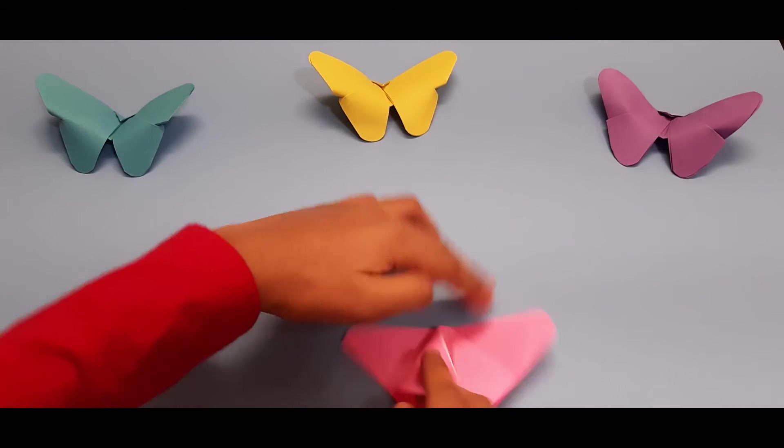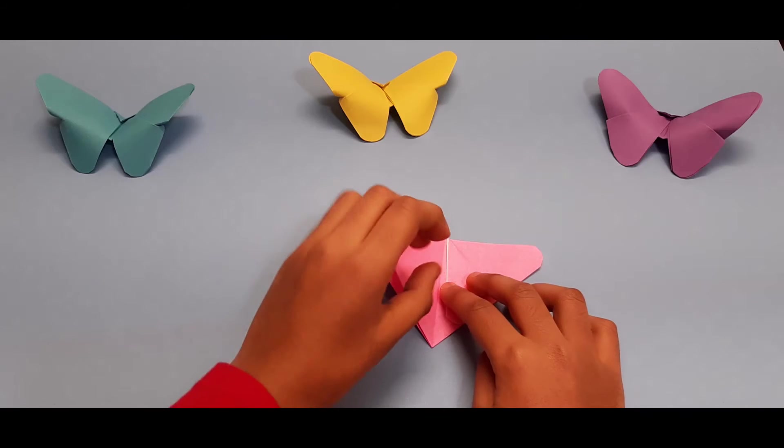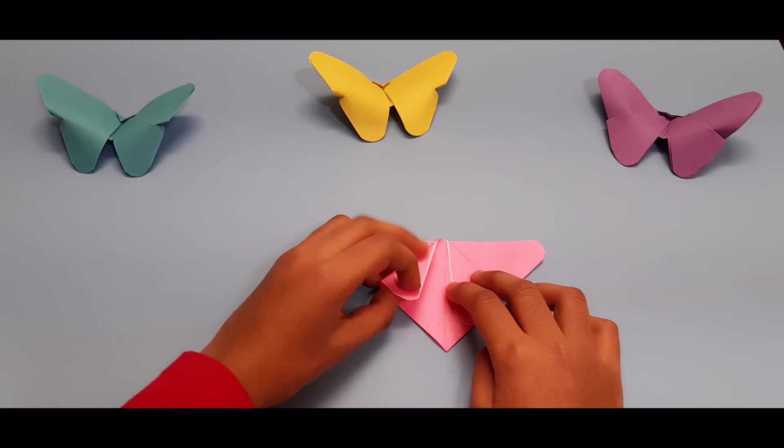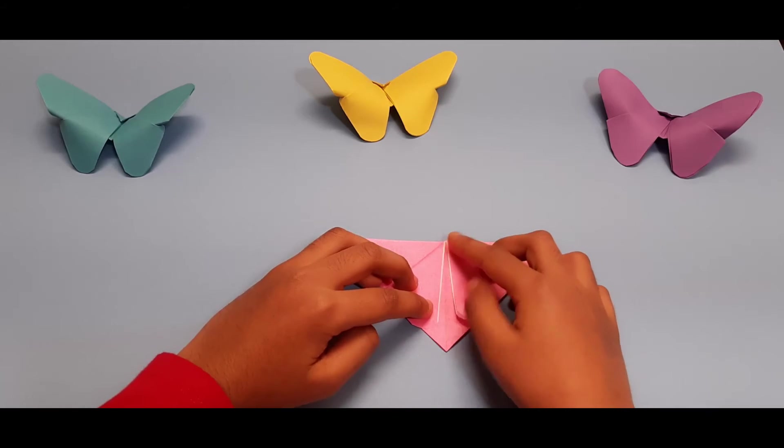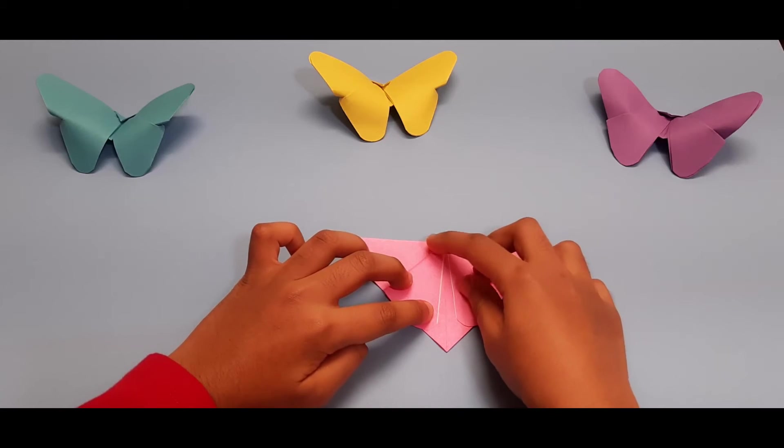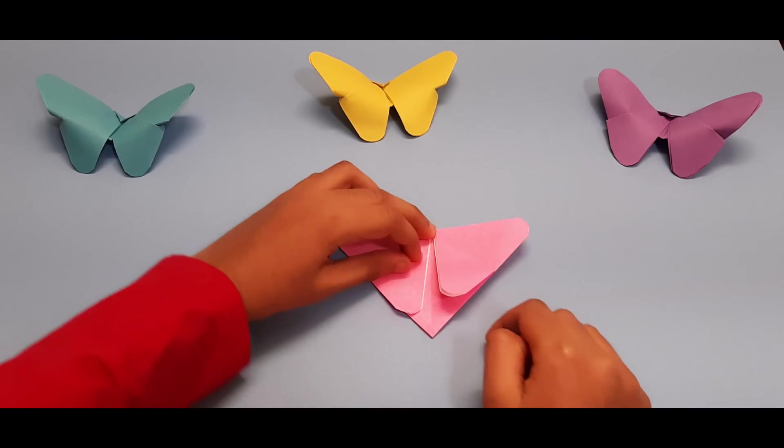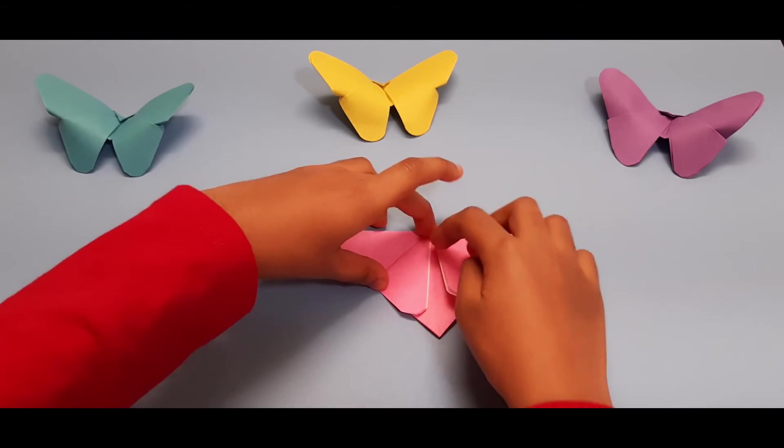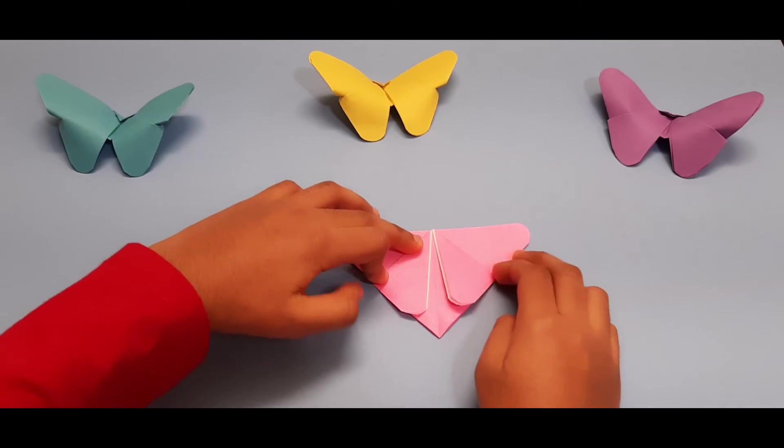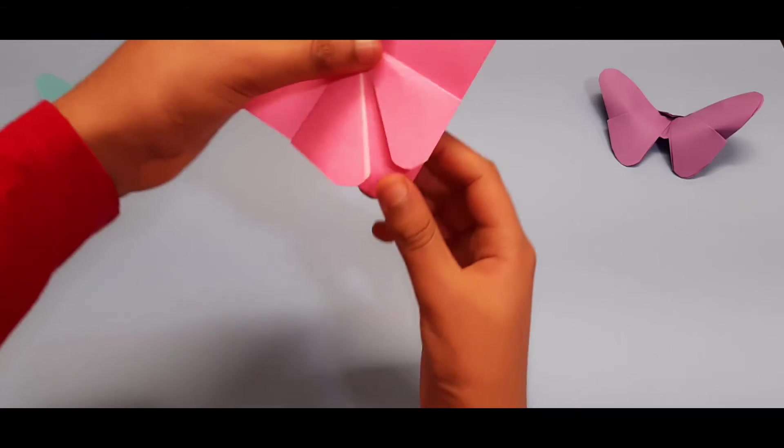Then take the other side, the other flap on the other side, and fold it so that it looks like a mirror of the other side like that. It should be a little triangle gap in the middle.